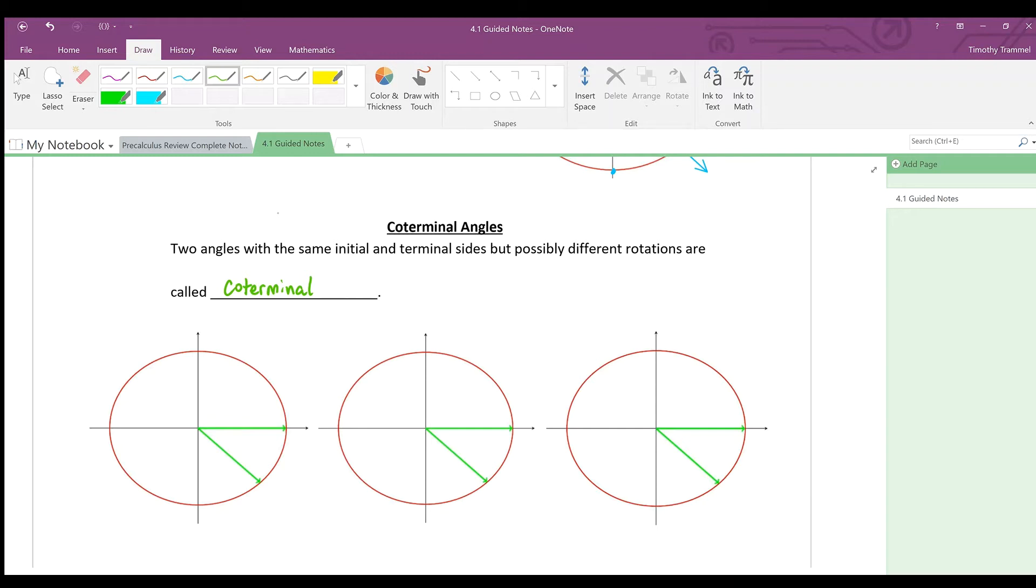Now, the question is, all three of these pictures look identical. How are these different angles? Well, one option is, I could rotate down this way, minus π over 4 radians. Or, alternatively, I could come around this way, 7π over 4 radians. Are there any other possible rotations that I could take to get here?